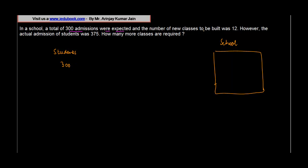And the number of new classes to be built was 12. So they basically expected that if 300 students come in, we'll have 12 classes. So let's say if this is the school, or rather the new portion, what they said was one, two, one, two, three, four...